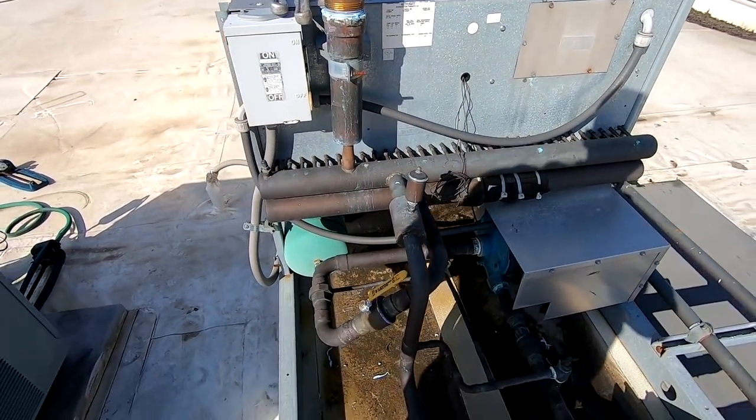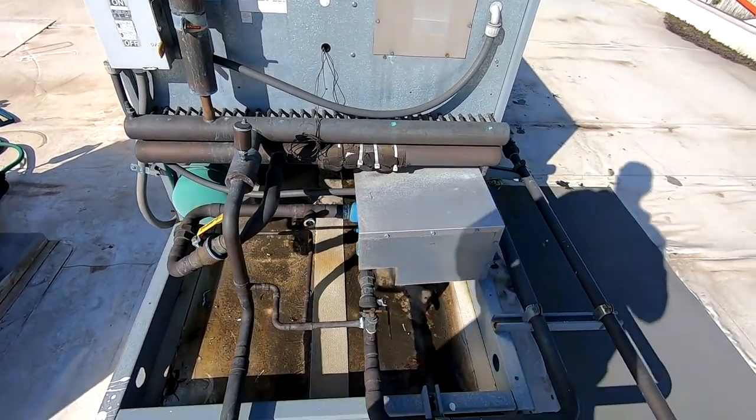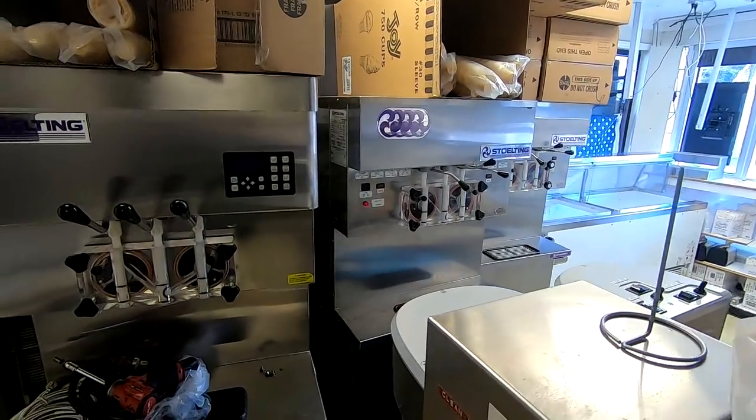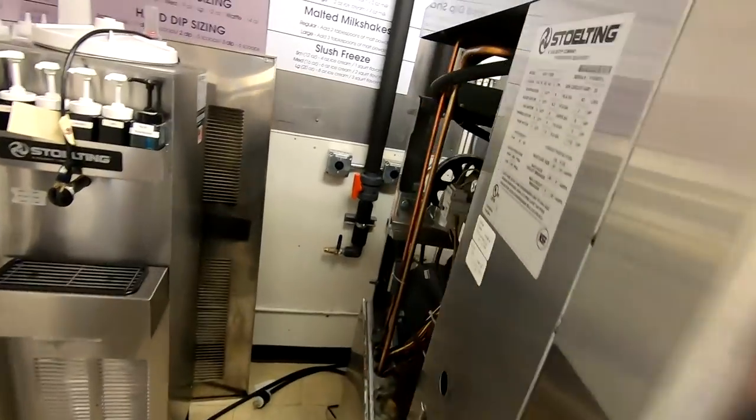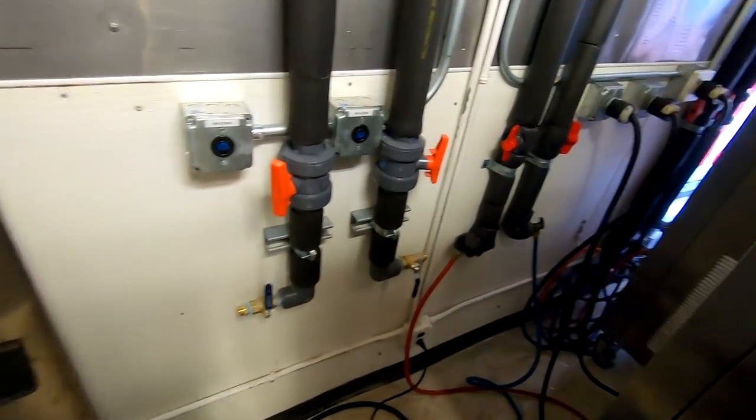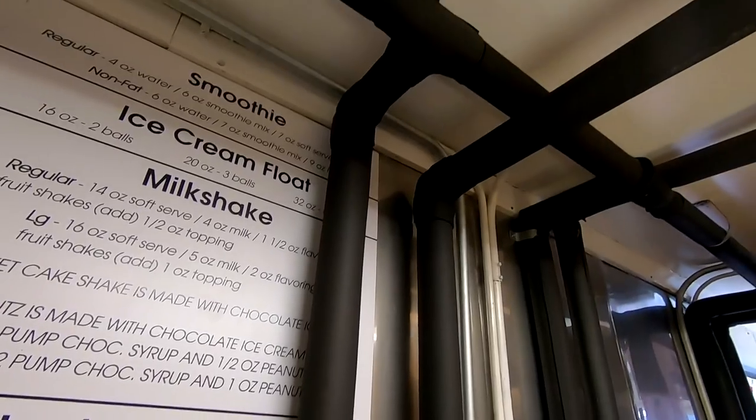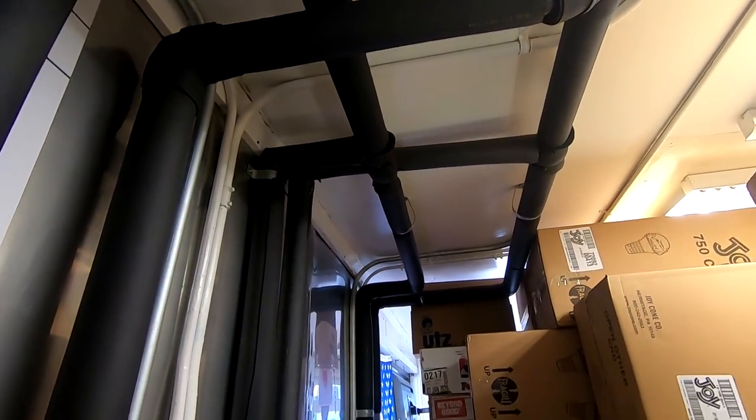So we're gonna go downstairs and take a peek and look at some of the stuff down there. They added me some isolation valves, so basically we got three water-cooled ice cream machines here and what we did is we added an extra machine to it.